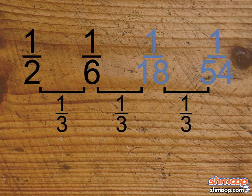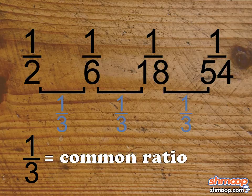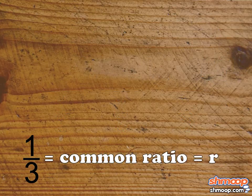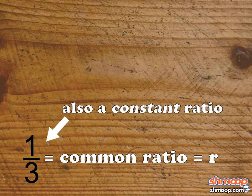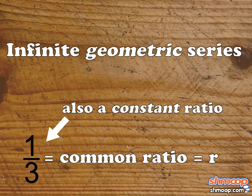We can call this number one-third the common ratio, or r, of the series. Because the terms of the series are separated by a constant ratio, we can describe the series even more specifically as an infinite geometric series.